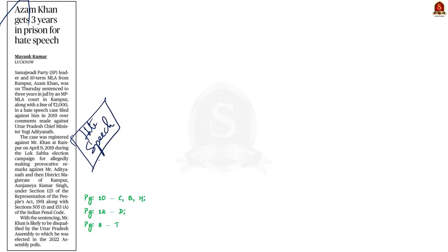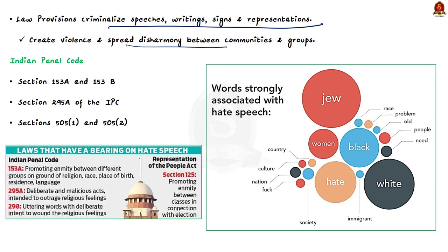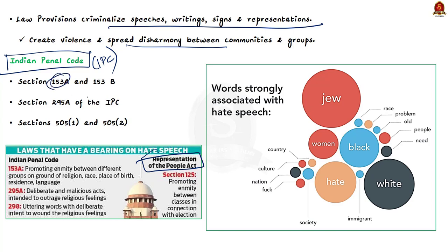Provisions related to hate speech can be found both under the Indian Penal Code (IPC) and under the Representation of People's Act. Under the IPC, there are three sections to note. First are Sections 153A and 153B of the IPC — both sections punish acts that cause enmity and hatred between two groups.